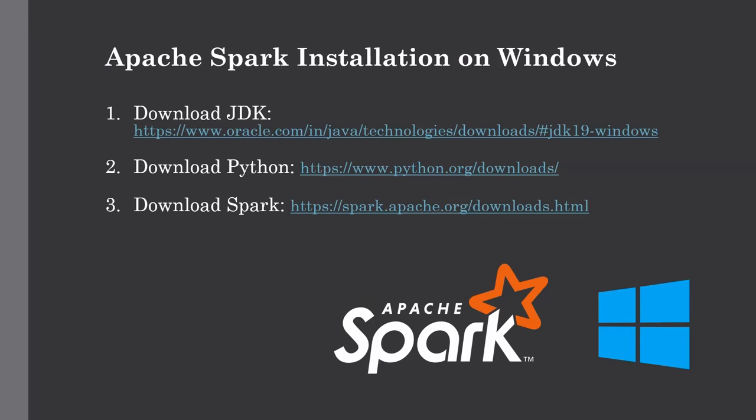Let's get started with our Spark installation. There are some prerequisites that you need to cover first to install Spark on your Windows PC. The first one is you should have the Java Development Kit, also known as JDK, version 8 and above. You should also have the latest version of Python. All the download links for these tools will be in the description below.